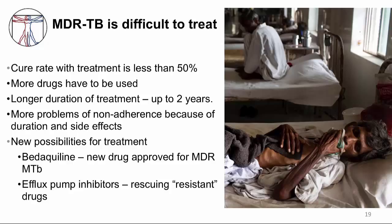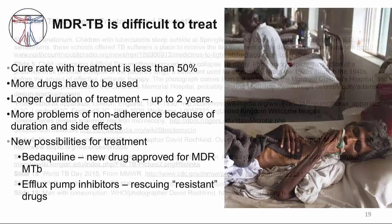Some research and development has been done. Bedaquiline is a new antibiotic approved for treating MDR-TB and the first new anti-TB drug in about 40 years. In addition, some studies have shown that a proportion of drug-resistant TB isolates don't have identifiable mutations in known genes, and the resistance may be due to increased efflux pump activity. Early studies have looked at using existing efflux pump inhibitors to rescue resistant antibiotics.